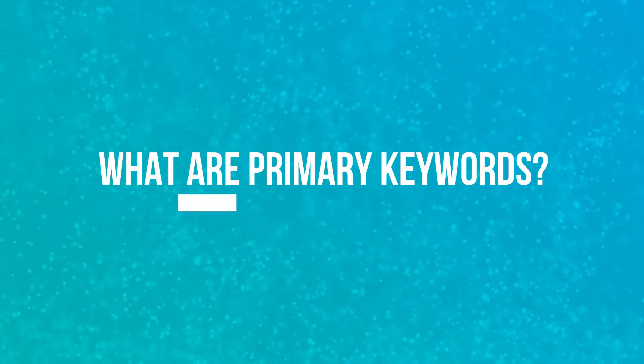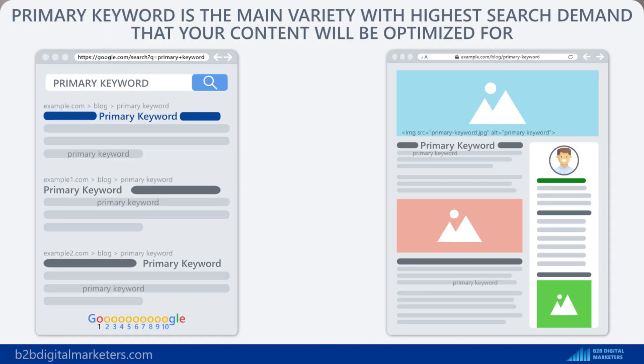So, without further ado, let's get started. First of all, let's answer the question: what are primary keywords? Primary keywords are the main keywords that people use to search for a particular topic or piece of information. They are the most relevant and specific terms related to the topic, and are often more popular or in-demand than other variations or synonyms. These keywords are the ones that you will focus on optimizing for with a dedicated page on your website, and it will form the content. The goal is to have this optimized page rank high in search engine result pages for the primary keyword.